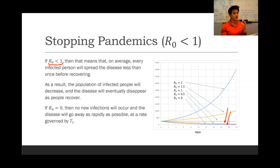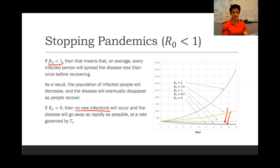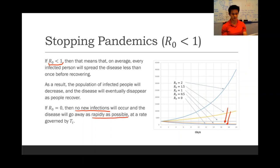If R0 equals zero — which is the ideal case — then no new infections will occur whatsoever, and the disease will be eradicated as rapidly as possible at a rate governed by how long it takes to recover.